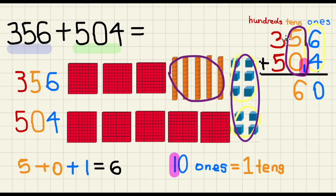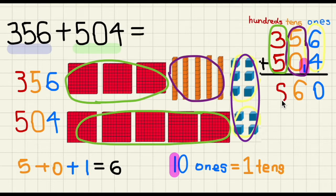And now all we have to do is to add the hundreds place together. So what is 3 plus 5? That's right, it's 8. So our answer for 356 plus 504 equals to 860.